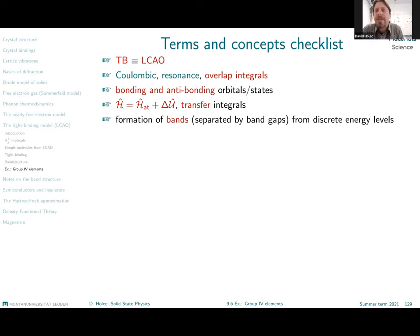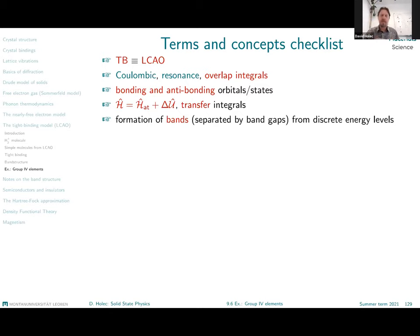This brings us to the end of today's lecture, in which we introduced the tight-binding method as a physics equivalent of the chemistry-based LCAO method. We described terms such as Coulombic integrals, resonance integrals, and importantly the overlap integrals, which describe how orbitals localized at different ionic cores overlap — corresponding to the size of the crystalline structure and the lattice parameter. For isolated molecules, this leads to the formation of bonding and antibonding states, which by increasing the number of atoms spread into whole bands of bonding and antibonding states.